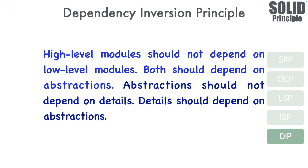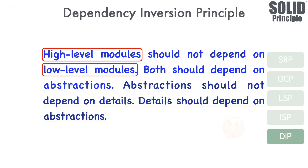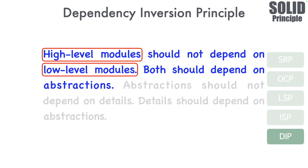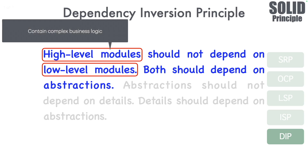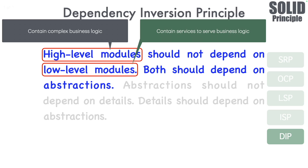In the initial part of the definition, there are words like high-level modules, low-level modules, and then later it talks about abstractions — that abstractions should not depend on details, and details should be depending on the abstractions. What does all this mean? Let's concentrate on the very first part, which is high-level modules should not depend on low-level modules. High-level modules are basically those that contain the complex business logic, and low-level modules basically contain the services to serve the business logic.